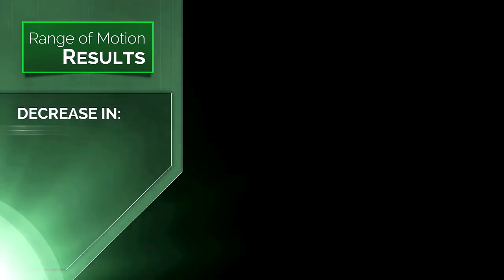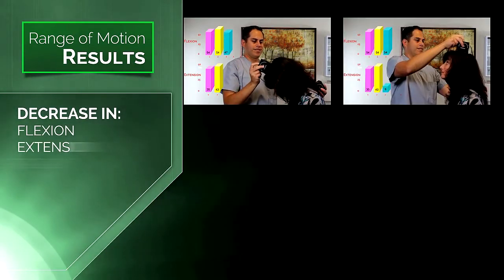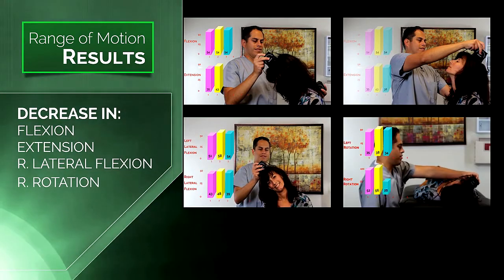When we look at the results of Emma's range of motion study, we discover that she has a decrease at the cervical spine in flexion, extension, right lateral flexion, and right rotation.